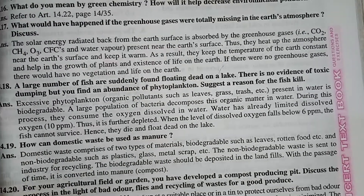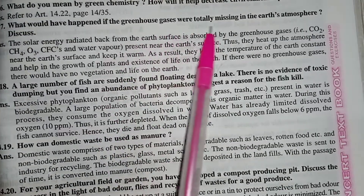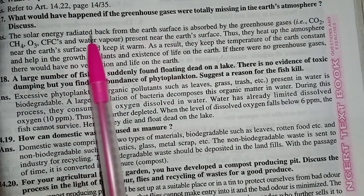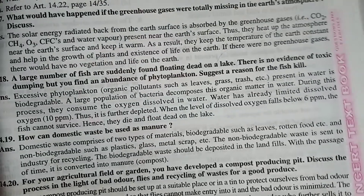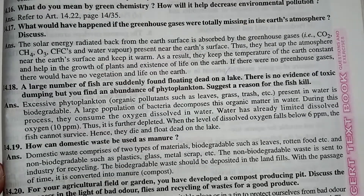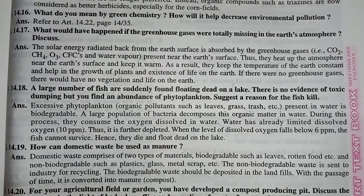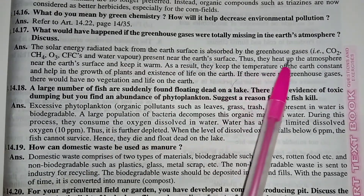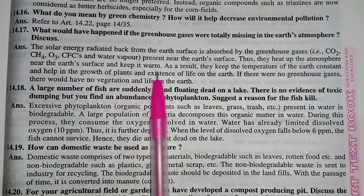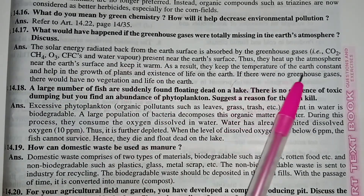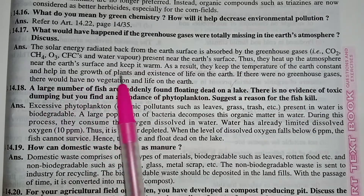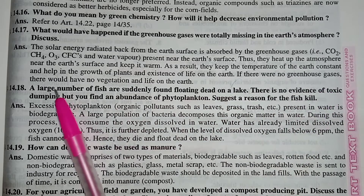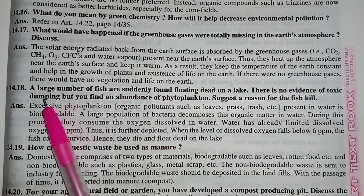Question: What would happen if the greenhouse gases were totally missing from the Earth's atmosphere? Solar energy radiated back from the Earth's surface is absorbed by greenhouse gases — CO₂, CH₄, O₃, CFCs, and water vapor — present near the Earth's surface. They heat up the atmosphere and keep it warm, maintaining constant temperature and supporting plant growth and life. If there were no greenhouse gases, there would be no vegetation and no life on Earth.